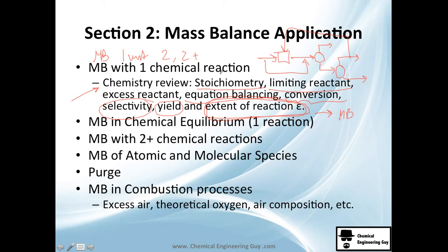Then we continue with mass balance in chemical equilibrium. We've already seen how to treat reactions, but what happens when they are in equilibrium? That means at certain temperature and pressure, certain amounts of A and B are formed. After that, we go to multiple reactions — not only one — which is also tricky, but if you understood how to treat one chemical reaction, this becomes manageable.